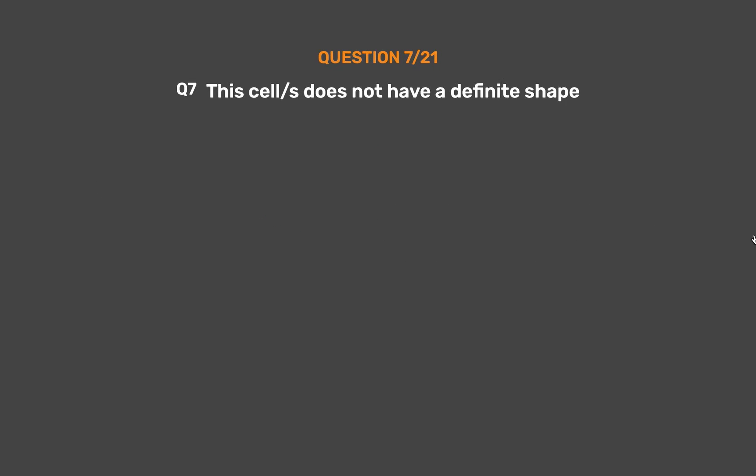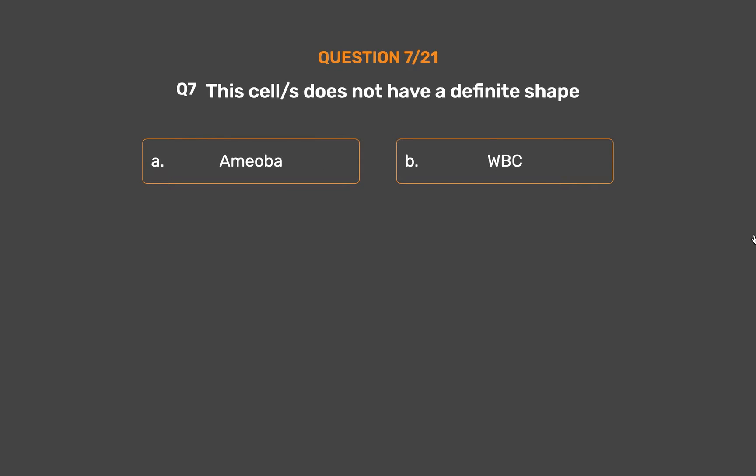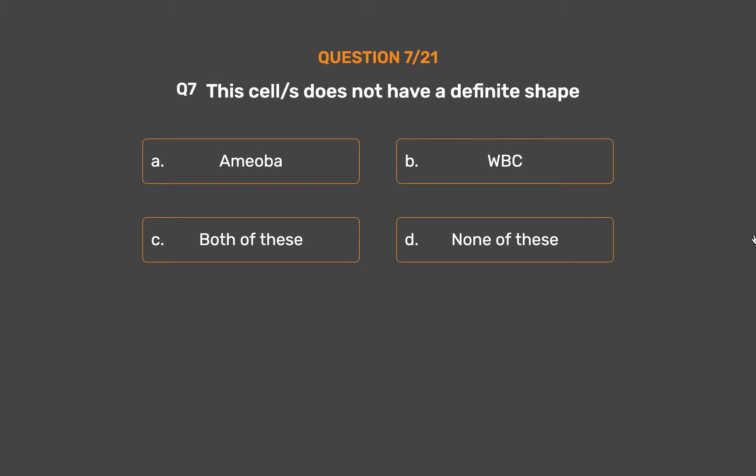Question No. 7: Which cell(s) does not have a definite shape? Option A: Amoeba. Option B: WBC. Option C: Both of these. Option D: None of these.